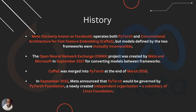Let's talk about the history of PyTorch. Meta, formerly known as Facebook, operates both PyTorch and Convolutional Architecture for Fast Feature Embedding, CAFE2. But models defined by the two frameworks were mutually incompatible — CAFE2 was the previous framework used before PyTorch was adopted by Meta AI. They pushed these two frameworks at the same time, but they were mutually incompatible.